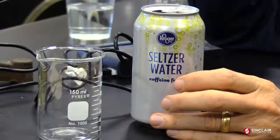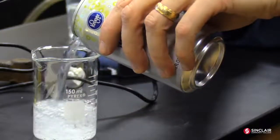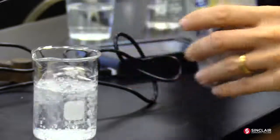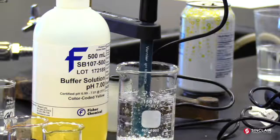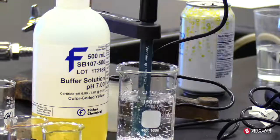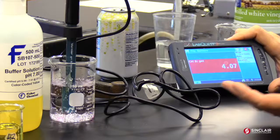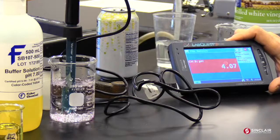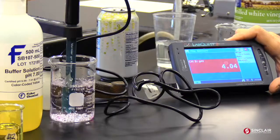This is seltzer water, which is nothing more than carbonated water. Let's see what it turns out for a pH. Remember that CO2, when you put it in water, is acidic. Okay. We're pushing pH 4 here. And you know, you might not have a pH meter at home.